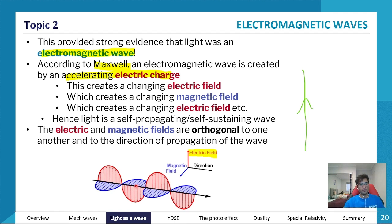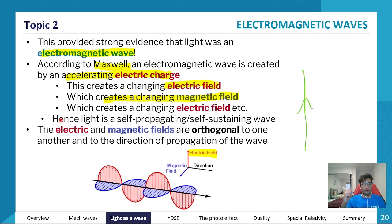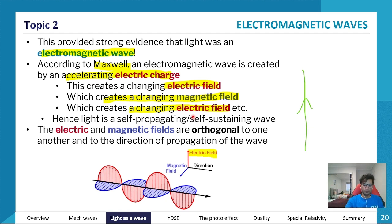Applying that same logic: accelerating a charge creates an electric field, and that electric field is also going to create a magnetic field. So we have an electric field creating a magnetic field. And going back to unit two — like the electrical generator, where a coil spinning in a magnetic field creates a current or electric field — that electric field creates a magnetic field, and that magnetic field creates an electric field, and this cycle just keeps going and going.